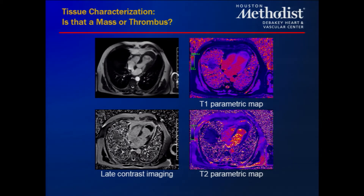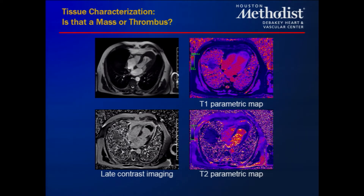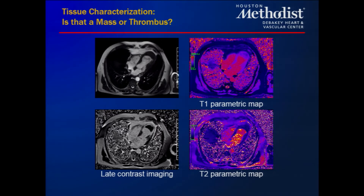Another great strength of cardiac MRI is tissue characterization. A big question is what is a cardiac mass, or is it actually thrombus? Shown here is a large mass in the apex that does not take up contrast on late contrast imaging, suggesting something well organized. Using the magnetic properties T1 and T2, this was confirmed as a large LV apical thrombus, which helps in decision making regarding antithrombotics or surgical referral.